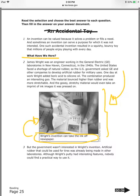James Wright was an engineer working in the General Electric Laboratories in New Haven, Connecticut in the 1940s. The United States faced a shortage of natural rubber, so the U.S. government asked GE and other companies to develop artificial rubber for military uses. One day at work, Wright added boric acid to silicon oil. The combination produced an interesting goo. The material bounced higher than rubber and was more stretchable. The gooey stretchable material would even take an imprint of ink images it was pressed on — so I can say it was bouncy, and I was right.